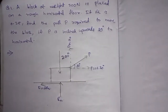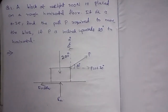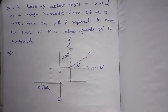The first problem: a block of weight 200 Newton is placed on a rough horizontal floor. If mu is 0.25, find the pull P required to move the block, if P is inclined upwards 30 degrees to the horizontal.